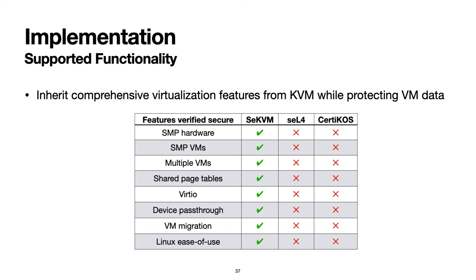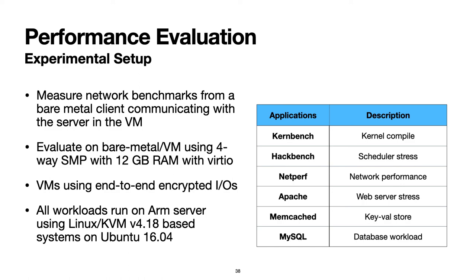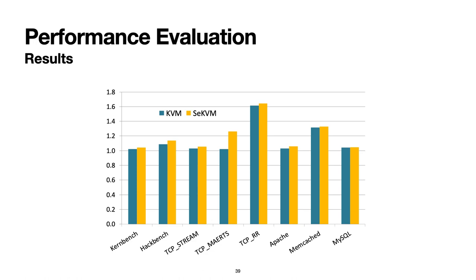Our formally verified SCKVM implementation supports comprehensive virtualization features inherited from KVM while providing verified VM protection. In contrast, seL4 and CertiCOS provide none of these features with verified VM protection. We tested application workloads on real ARM server-class hardware running SCKVM, including a mix of CPU and IO-intensive benchmarks and commonly used server applications including Apache, Memcached, and MySQL. The results show modest overhead overall on SCKVM compared to a modified KVM, with results normalized to bare-metal execution.